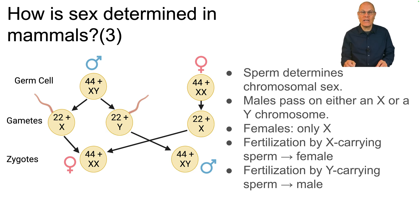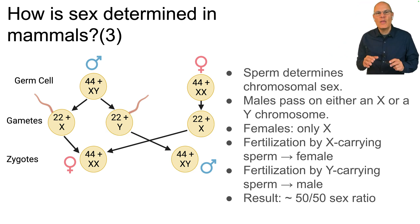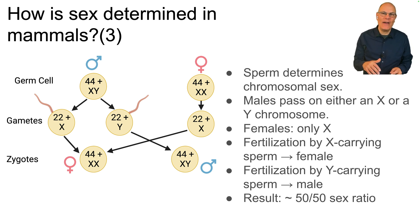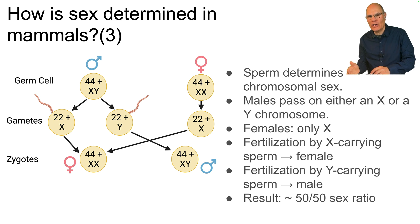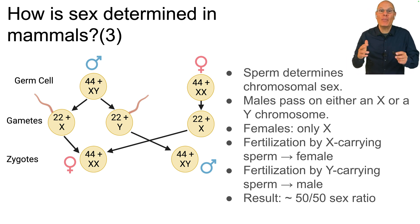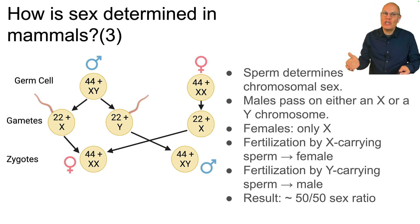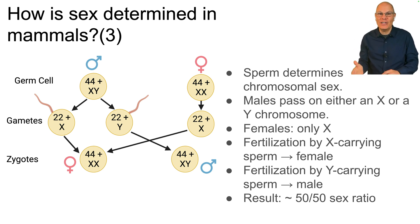That's chromosomal sex determination in all mammals. The fact that half of the eggs will be fertilized by an X-carrying sperm and half by a Y-carrying sperm explains why among births in any mammal population, the initial ratio of males to females will be 50-50.